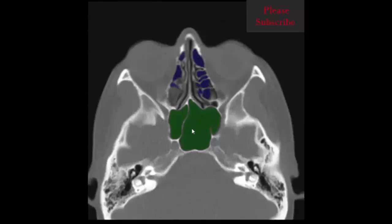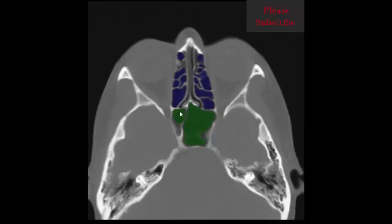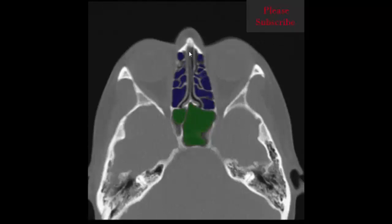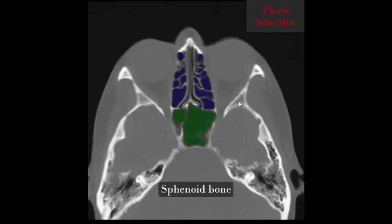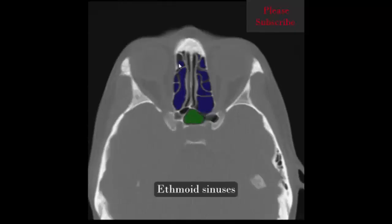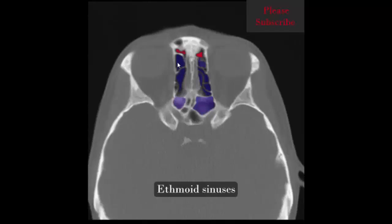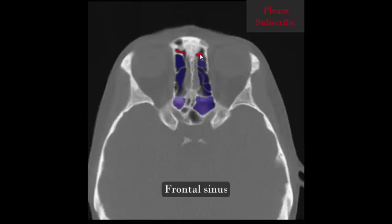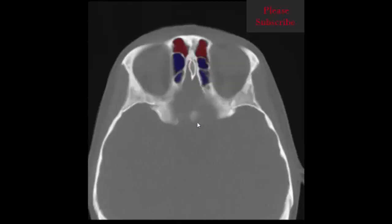Nasal septum, sphenoid sinus, and ethmoid sinuses are clearly seen. Also identified are the nasal septum, nasal bone, right and left zygomatic bone, right and left sphenoid bone, and right and left ethmoid sinus.